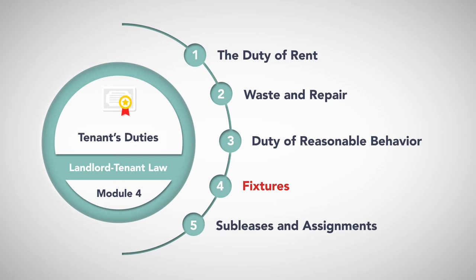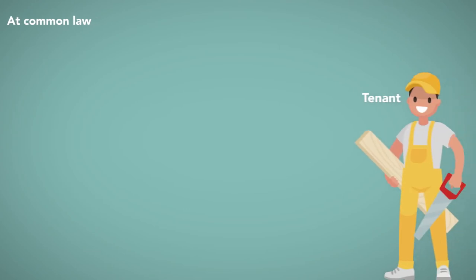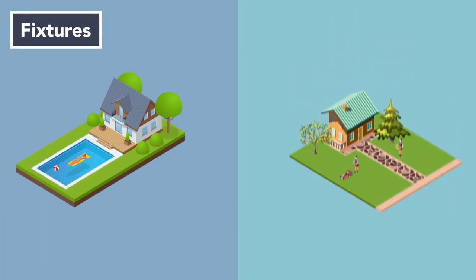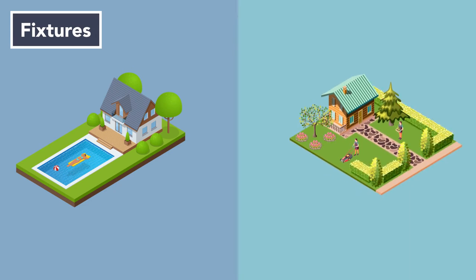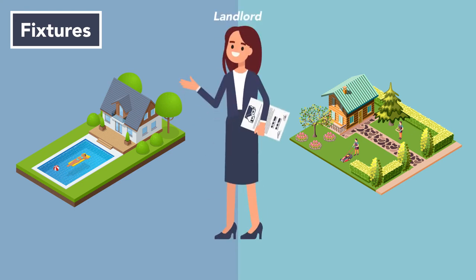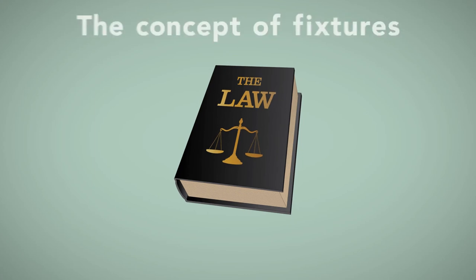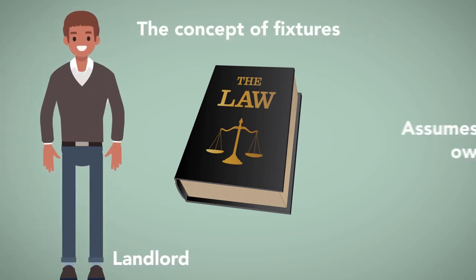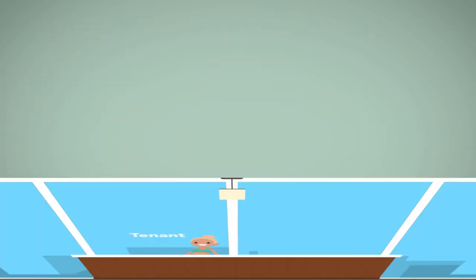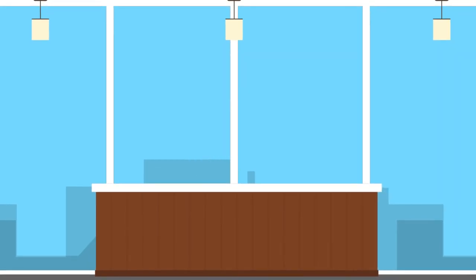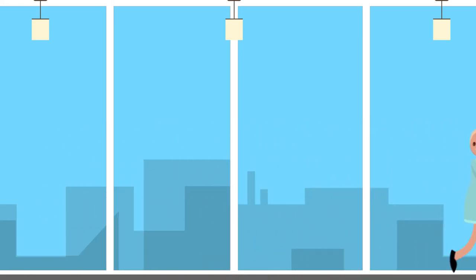Fixtures. At common law, if a tenant attached something to leased property in such a way that the attachment or installation was permanent, this was known as a fixture. Fixtures, such as new structures or improvements on plots of land, were deemed to be permanent enhancements of the property. As such, the landlord would assume ownership of the fixtures at the end of the lease. Today, the law has narrowed the concept of fixtures of which the landlord assumes ownership. Generally, if the tenant did not intend for the attachment to be permanent and can remove the attachment without causing substantial damage, the tenant may remove the attachment.